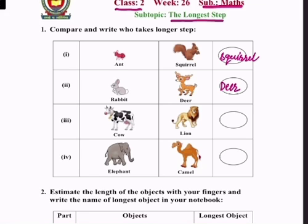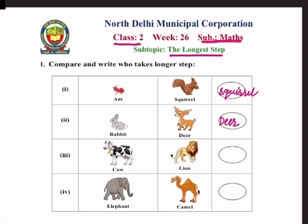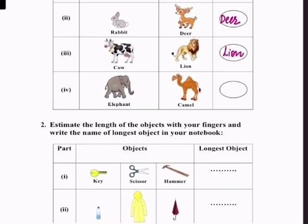Number 3: cow and lion. Cow takes the longest step compared to lion. Or camel. Camel.